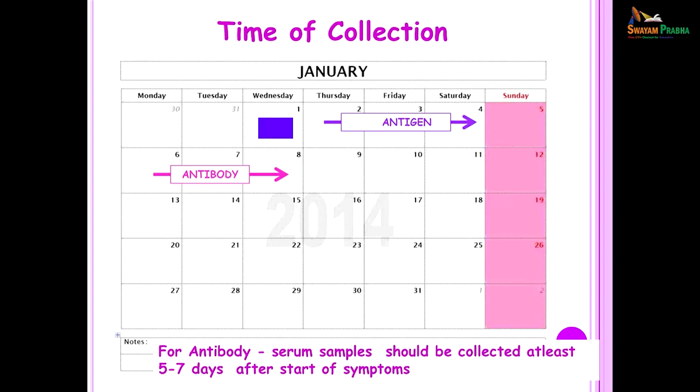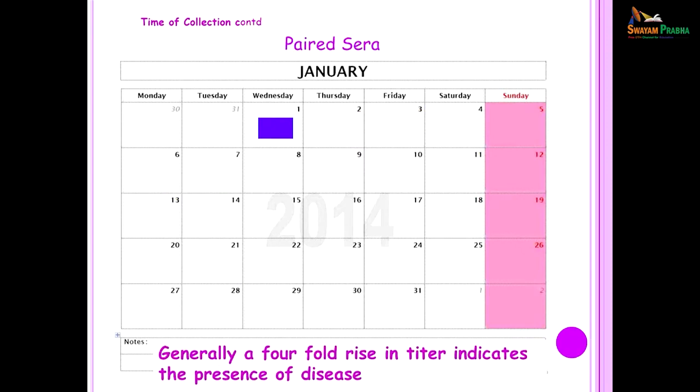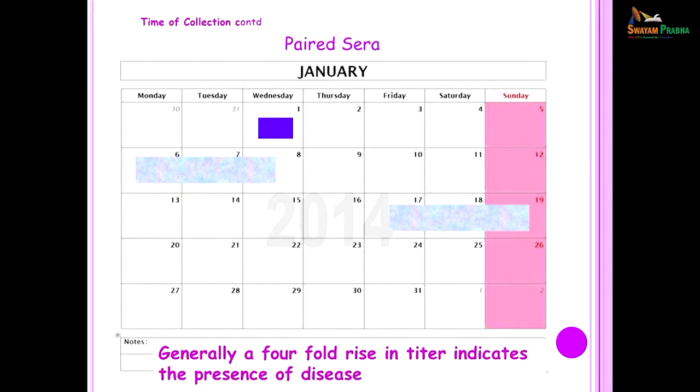This brings me to another terminology which you will come across: paired sera. Paired sera is usually done to detect a rise in the antibody titer. You would first collect the sample around the 6th to 8th day of the illness and another sample about 10 to 14 days later, when you will be able to demonstrate at least a 4-fold rise in titer. If you can demonstrate this 4-fold rise in titer then it means that the patient definitely suffered from the disease.